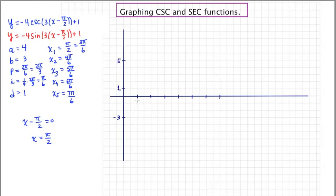This is going to be pi over 6. This is going to be 2 pi over 6. This is going to be 3 pi over 6. This is going to be 4 pi over 6, 5 pi over 6, 6 pi over 6, and finally 7 pi over 6. I guess I should also label my axes. This is y, and I think this is x.